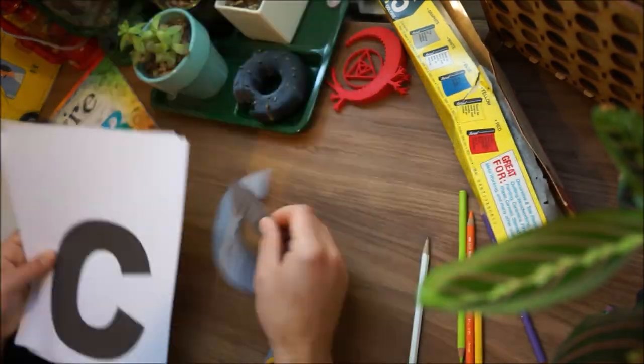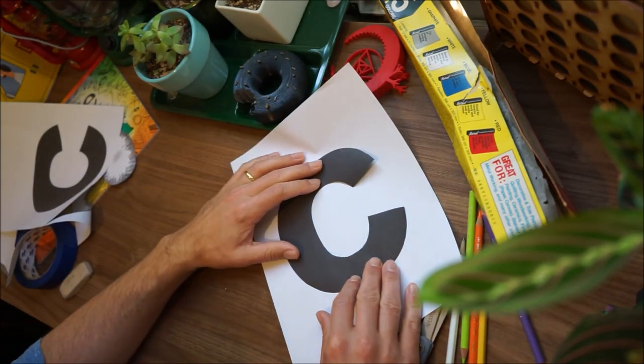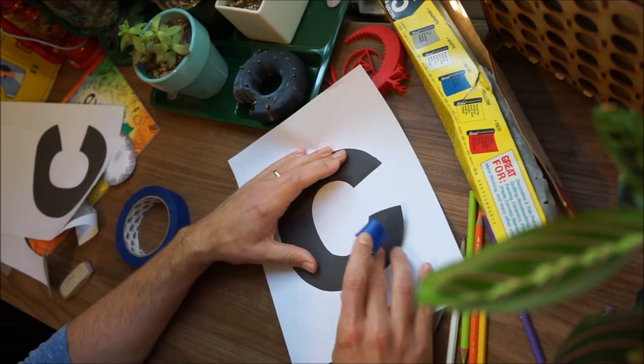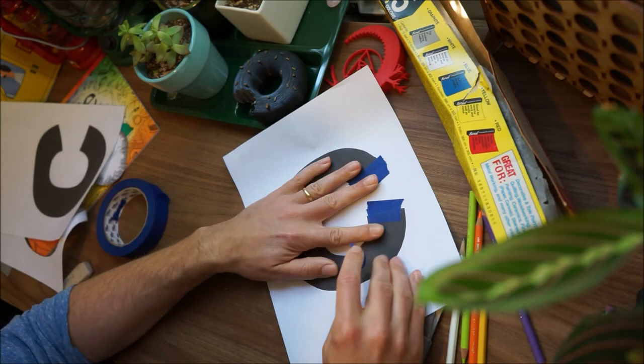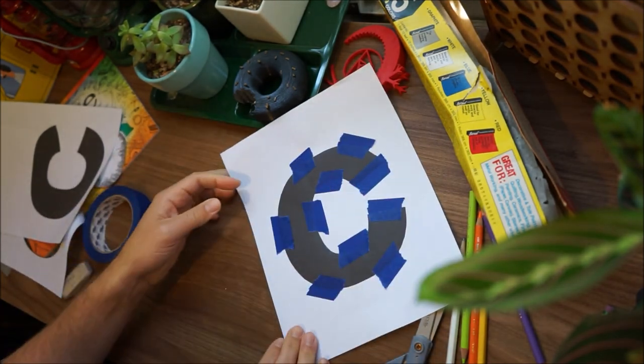We're going to take our carbon copy C and put it in the middle of our blank sheet of white paper. When you tape the carbon copy C down, don't tape it down so securely that it might rip the paper when we take it off because we are going to take this off here in a moment.